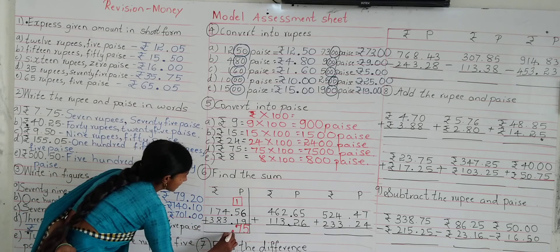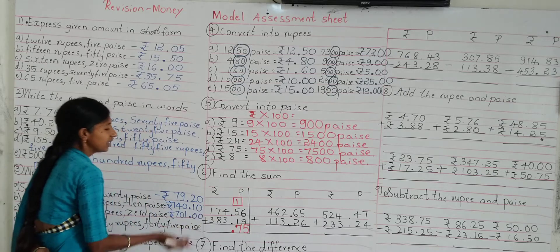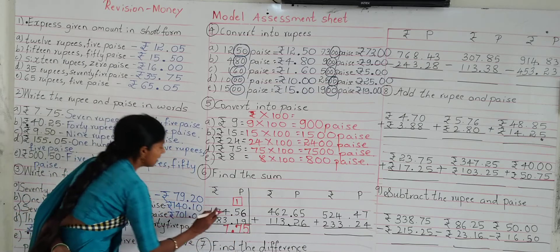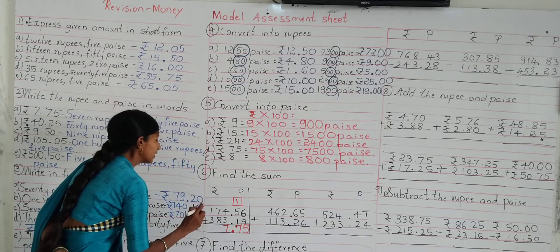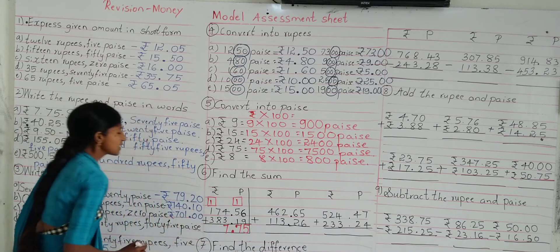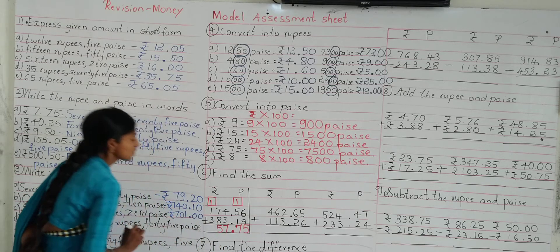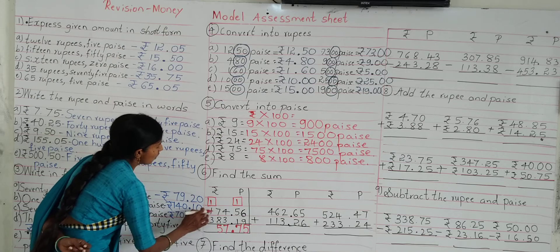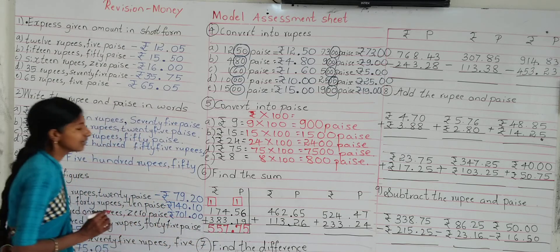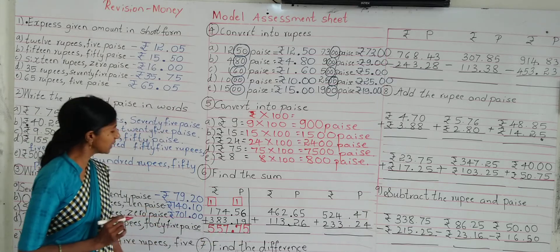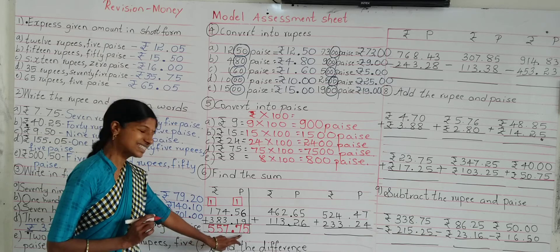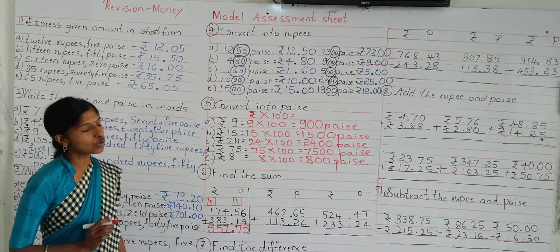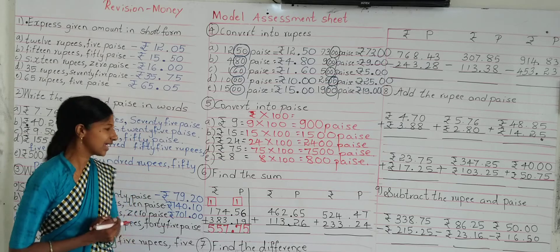5 plus 1 is 6; 6 plus carry 1 is 7. Write down in the tens column. After two digits, insert a dot to separate the rupees and paisa. Next, add the rupees: 4 plus 3 is 7, write in the hundreds column; 7 plus 8 is 15 — carry 1, write down 5. Next, add the digits in the tens column: 3 plus 1 is 4, 4 plus 1 is 5. Write down in the tens column. So what is the sum? 557 rupees 75 paisa. By using the rules of addition, we can add the given rupees and paisa.